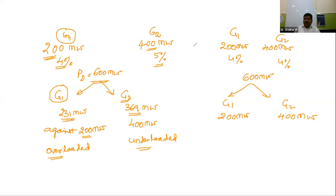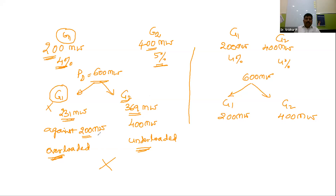When droop characteristics are unequal, one generator gets overloaded and the other gets under-loaded. The overloaded generator suffers because the excess 31 MW generates too much heat. If temperature exceeds the insulation's acceptable limits, there is a serious threat to the insulation and the machine itself.